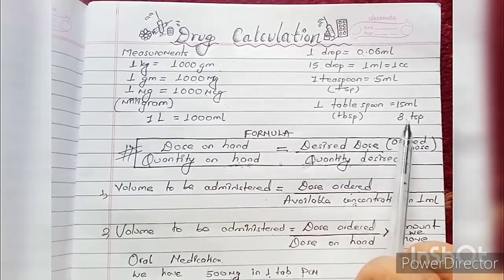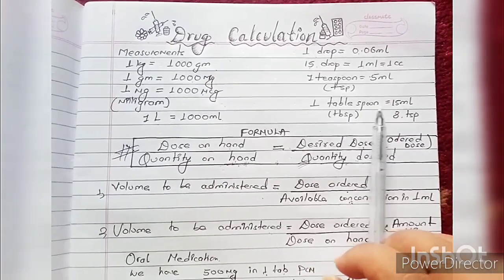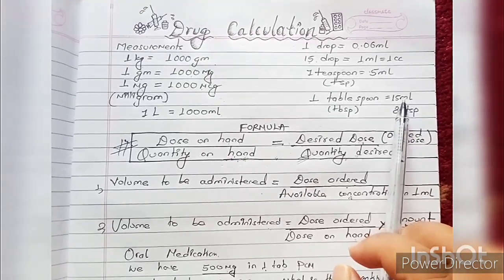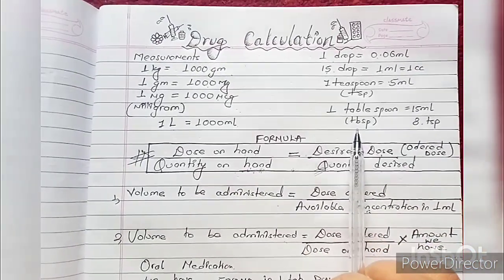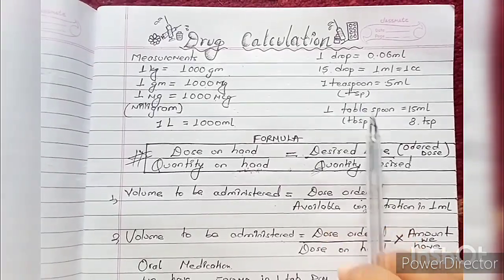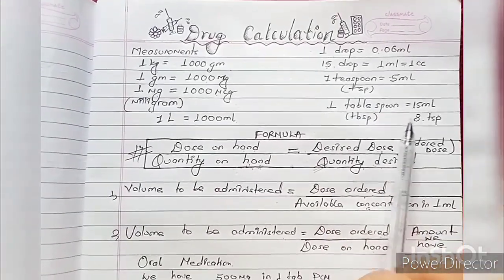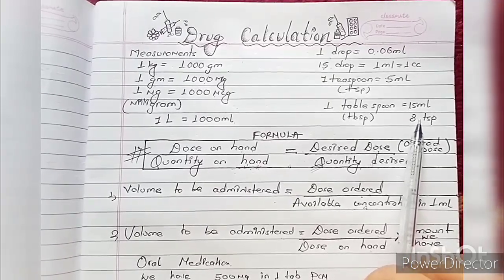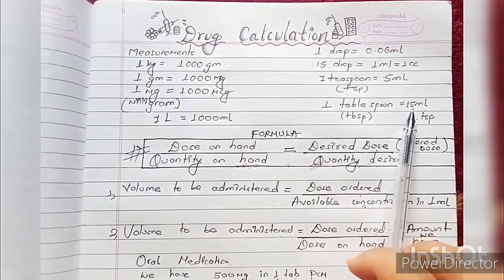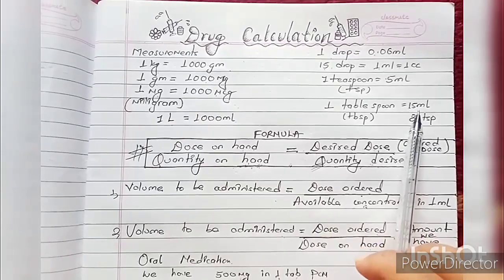So 1 tablespoon equals 3 teaspoons. If you want to see: 1 teaspoon is 5 mL, so 3 times 5 is 15 — that's 3 times bigger, which confirms that 1 tablespoon equals 3 teaspoons.